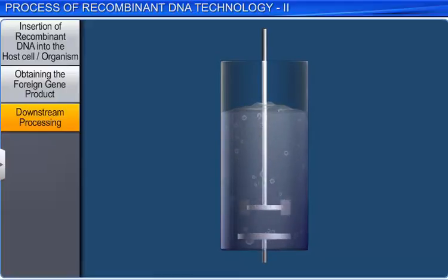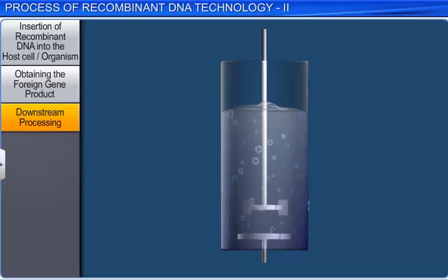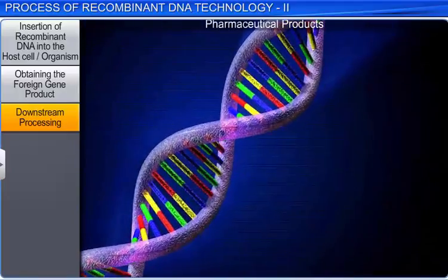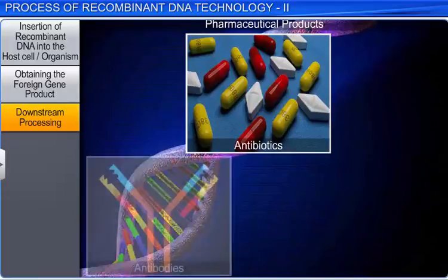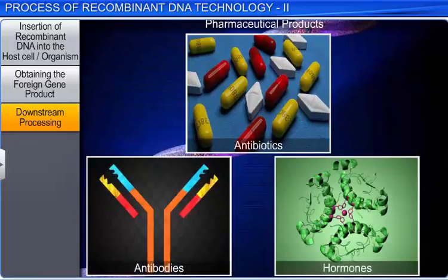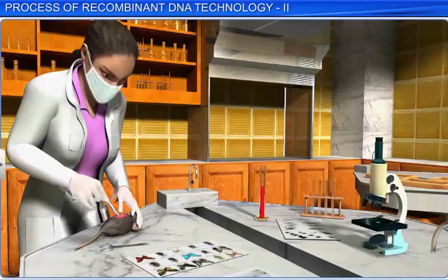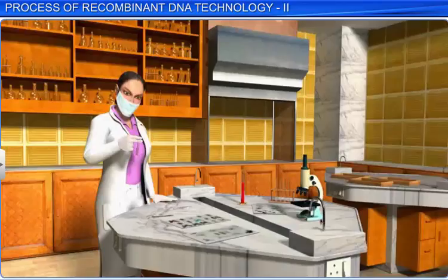Downstream processing refers to the recovery and purification of biosynthetic products, such as pharmaceuticals, before they are brought to the market as finished products. In downstream processing, pharmaceutical products such as antibiotics and hormones are formulated with suitable preservatives. Thereafter, these products are also subjected to clinical trials and quality testing. By aiding in the development of new medicines and vaccines, recombinant DNA technology has revolutionized medical science and opened new vistas of research.